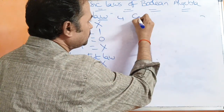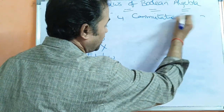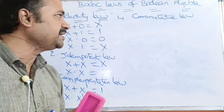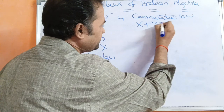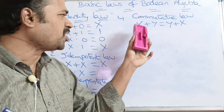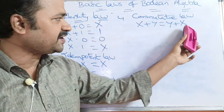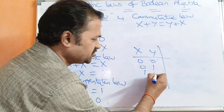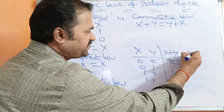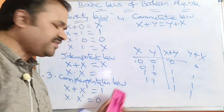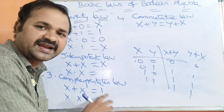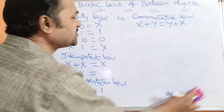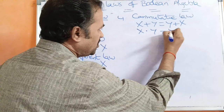The next one is commutative law. Commutative law states that x plus y equals y plus x — the order is not important. If we perform OR operation on x and y, or OR operation on y and x, we get the same result. We can verify this with a truth table: for all input combinations (0,0), (0,1), (1,0), (1,1), x plus y equals y plus x. Similarly, x dot y equals y dot x.